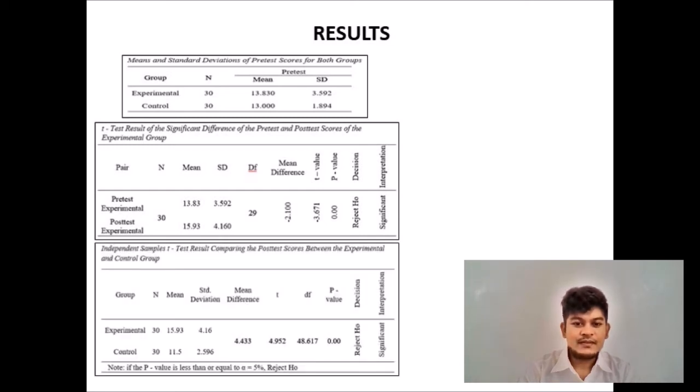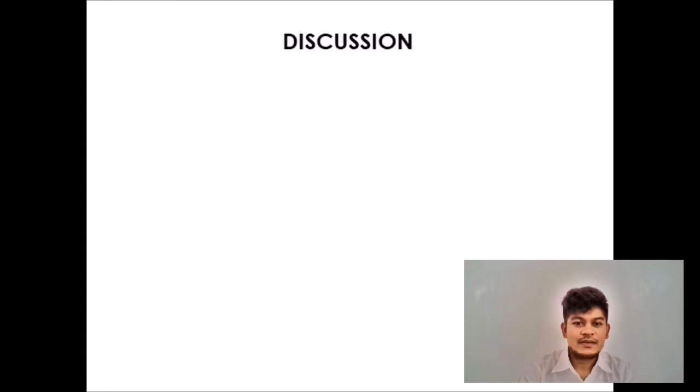The t-value between the experimental and control group was 4.952. Results from the independent sample t-test reveal that there is a statistically significant difference in mean scores between groups after the intervention. With this, the null hypothesis is rejected in favor of the research hypothesis. Subsequently, p-value is less than 0.05. Also, it can be inferred that the utilization of personalized learning in teaching mathematics, specifically in geometry, has positively impacted the student's achievement.